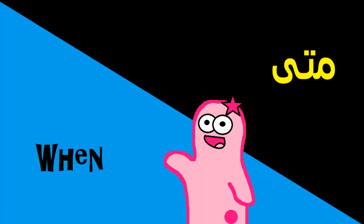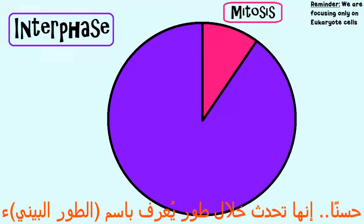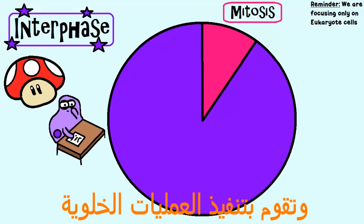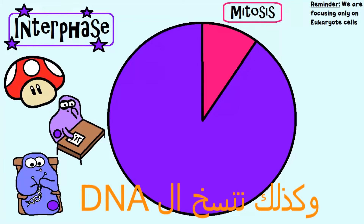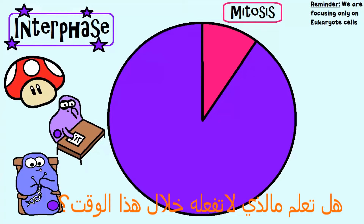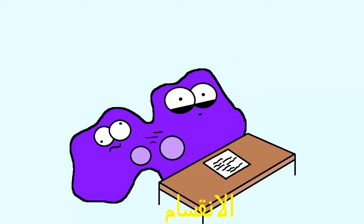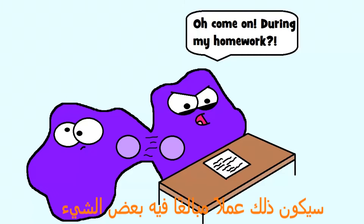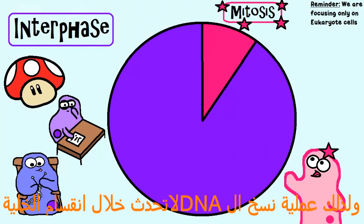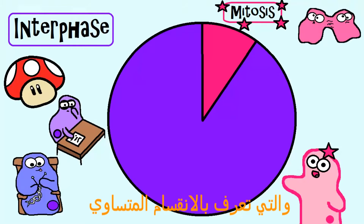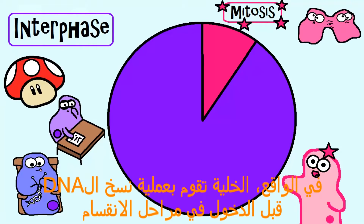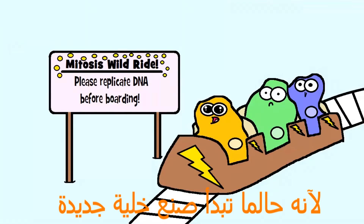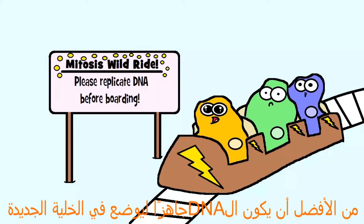When does this happen? Well, this typically happens during a stage known as interphase. Interphase is when a cell is growing, it's carrying out cell processes, and it's replicating its DNA. You know what it's not doing at the exact same time? Dividing. You don't want a cell to be replicating DNA AND dividing at the same time — that's a little bit too much multitasking. So DNA replication does not happen during cell division, otherwise known as mitosis. Cells replicate their DNA before division processes like mitosis and meiosis, because once you make the new cell, you better have DNA to put in there.